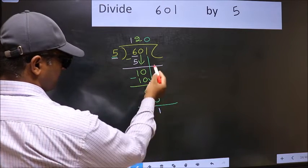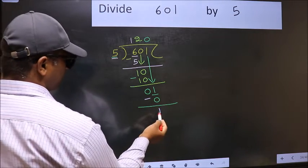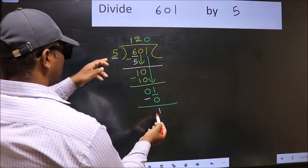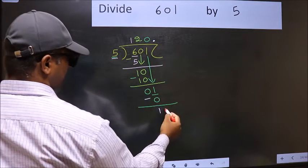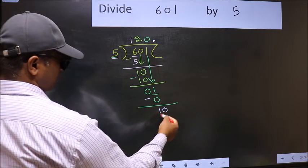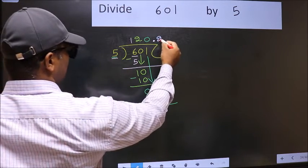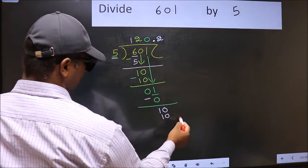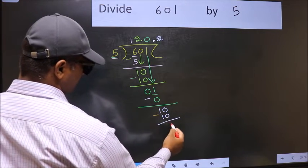Over here, we did not bring any number down and 1 is smaller than 5. So now you can put dot and take 0. So 10. When do we get 10 in 5 table? 5 2 is 10. Now you should subtract. 10 minus 10, 0.